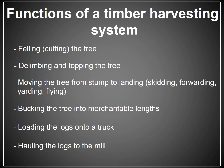Now we're going to get into the parts of a harvesting system — how does a tree in the woods get from the woods to the mill where it's turned into a finished product? There are a few fundamental steps common to all harvesting systems. The tree has to be cut, it has to be delimbed — the limbs need to be cut off — and it needs to be topped, removing the unmerchantable material. Typically, only merchantable material leaves the woods.